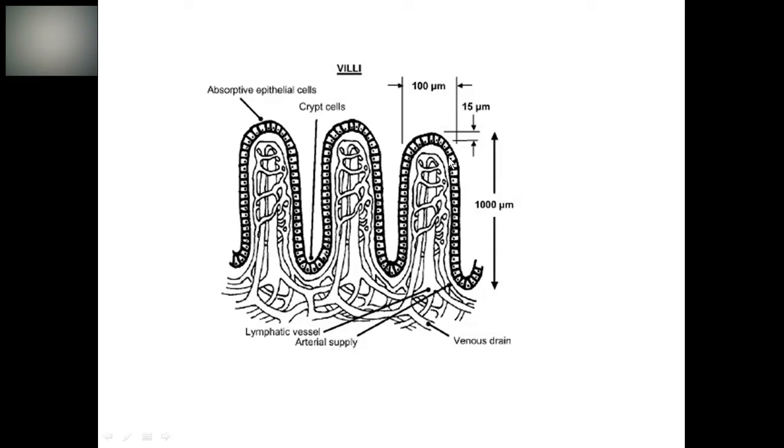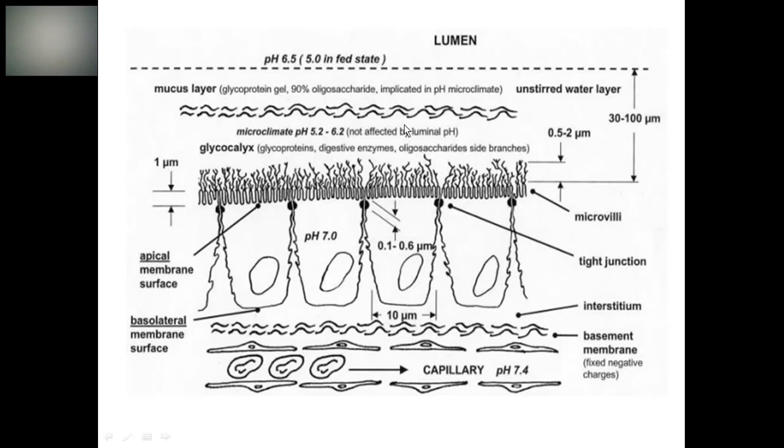The epithelial cells are further composed of finger-like projections called microvilli, which play a very important role in absorption. This is the diagram of your epithelial lining. You can see the epithelial lining has further finger-like projections called microvilli. The microvilli has branching of glycoprotein known as glycocalyx.